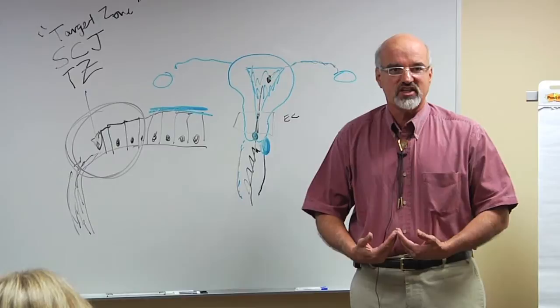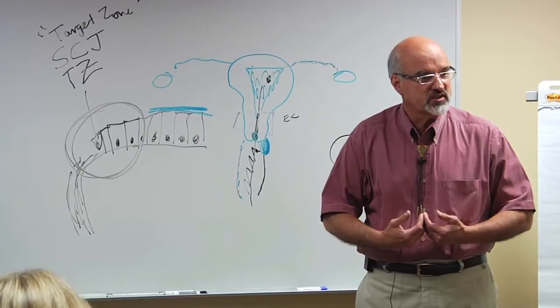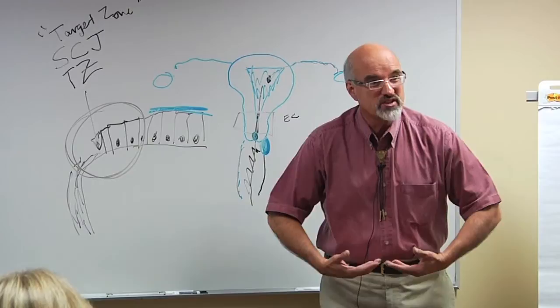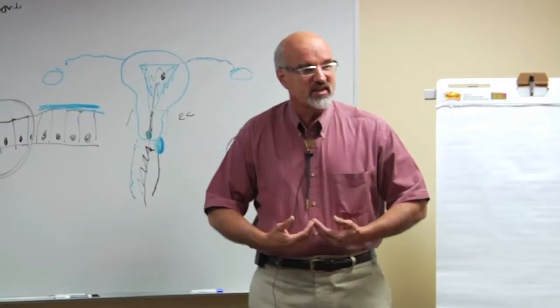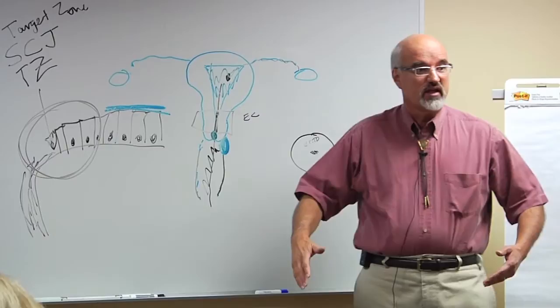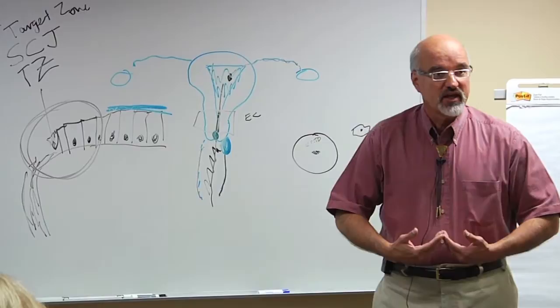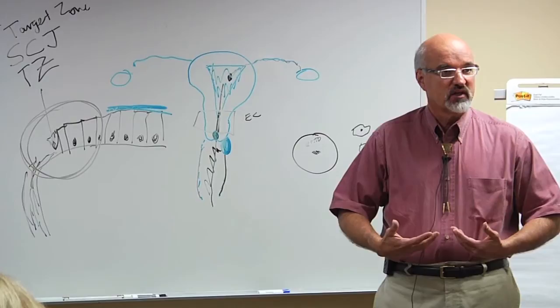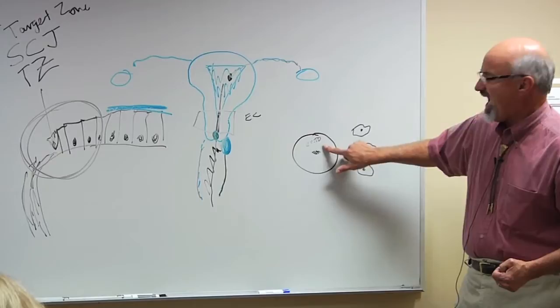When she becomes pregnant, the uterus enlarges and the endocervical canal, the squamous columnar junction actually opens up some. The os opens up because of the size of the uterus, and the squamous columnar junction actually moves out here onto the ectocervix. Postpartum it moves back inside, but with each birth it goes out and comes back, but not to where it was before. So that a woman that has had several children, her squamous columnar junction may be out on the ectocervix.